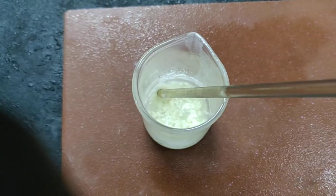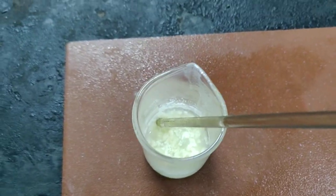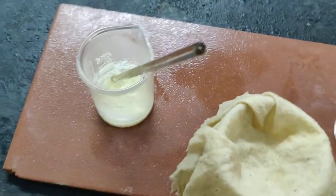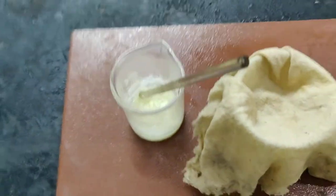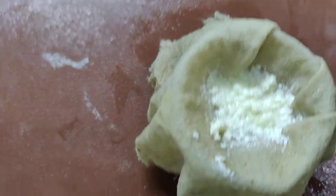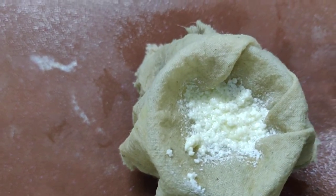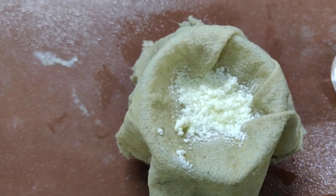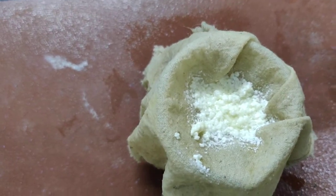So the next step is filtration. We are supposed to filter it. I have a muslin cloth here. We are going to filter it into it. Transfer the curdled milk into muslin cloth like this. Allow it to drain for some time.